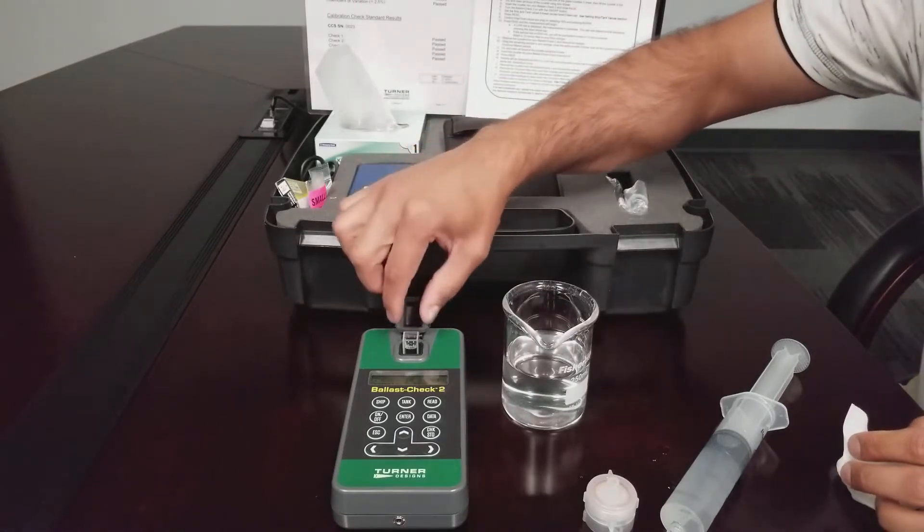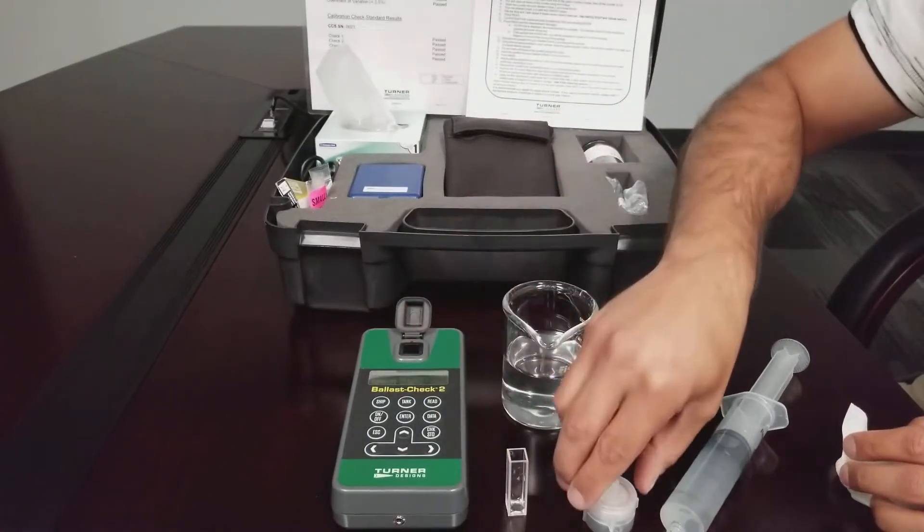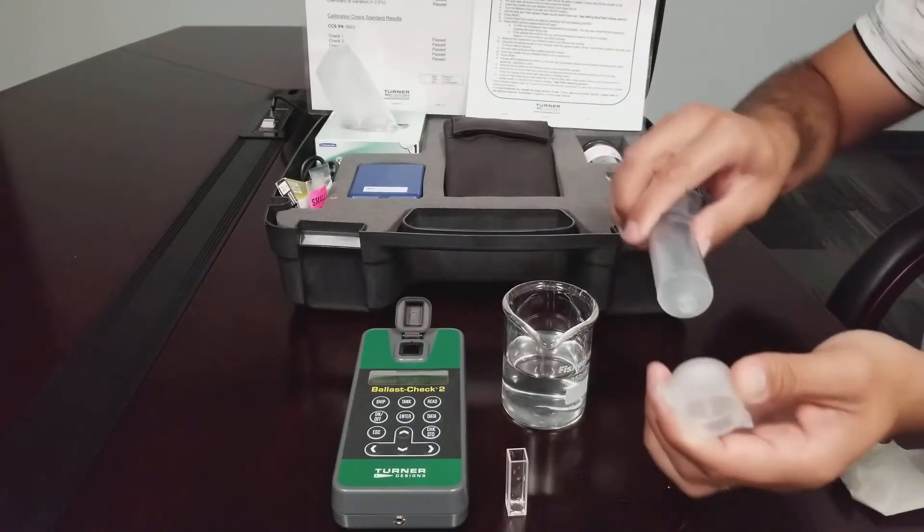Remove the cuvette from the instrument and discard the sample. Obtain a 10 micron filter and attach it to the end of the syringe.